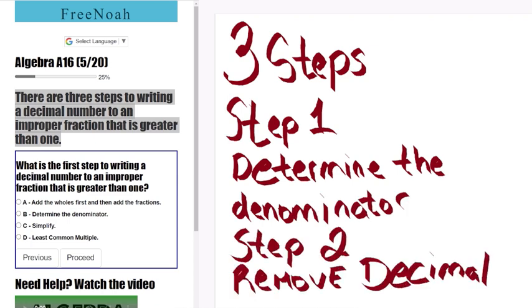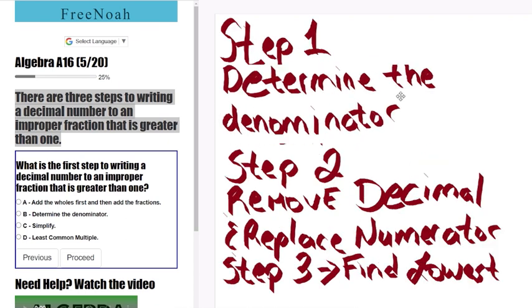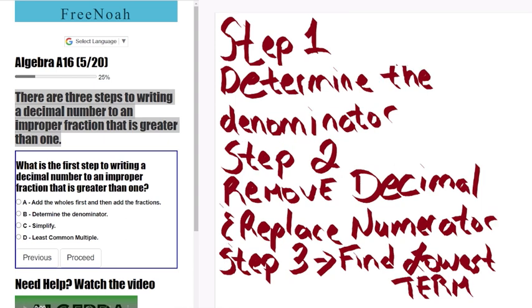Step two is removing the decimal point and adding the whole value to the numerator. And step three is find the lowest term.